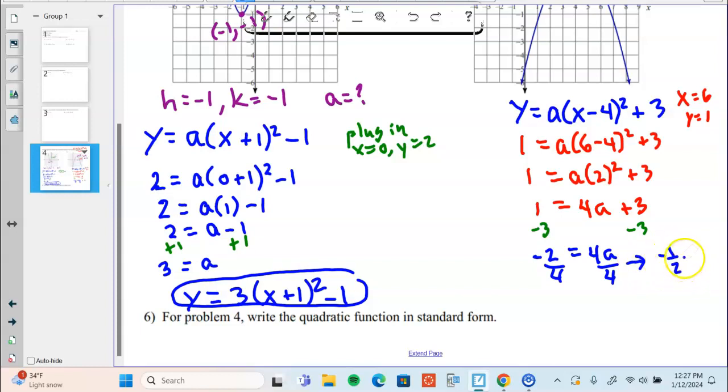Fours cancel, negative two over four is negative one half. Final answer: y equals negative one half times x minus four squared plus three.